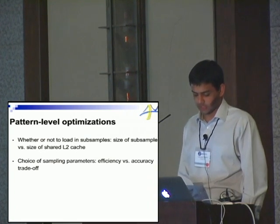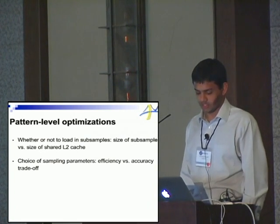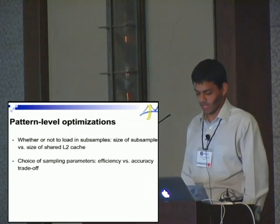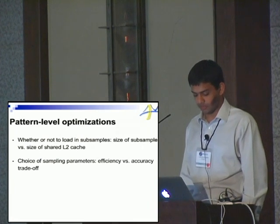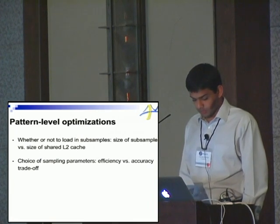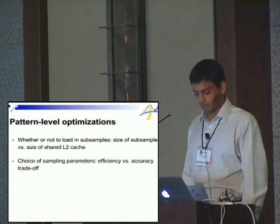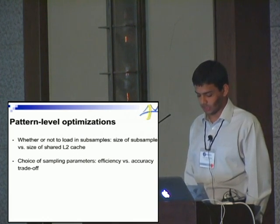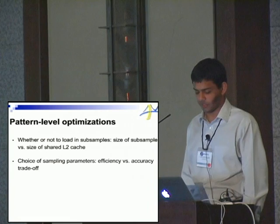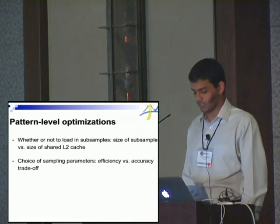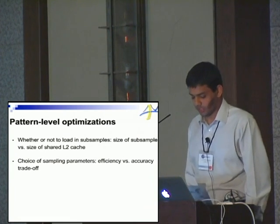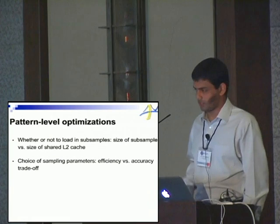Another pattern-level optimization is choosing the sampling parameters for BLB, which determine the efficiency versus accuracy trade-off of running the algorithm. These parameters can be specified by the specializer user but are not adjusted based on platform parameters, since the specializer does not include a method to determine acceptable losses in accuracy.